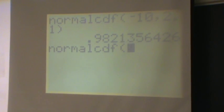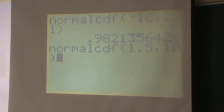Now we want to be greater than 1.5, so we'll put in 1.5, comma, and then we'll do plus 10, because we want to go out at least 10 standard deviations and get rid of most of our probability.